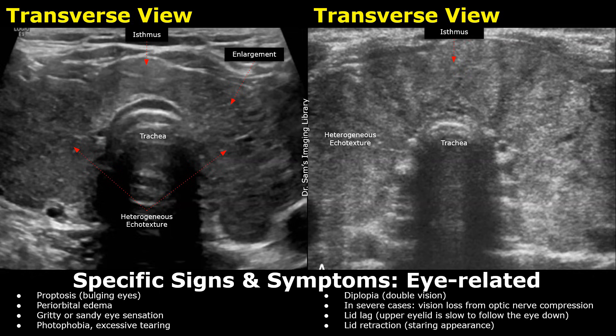Photophobia refers to abnormal sensitivity or intolerance to light. Diplopia refers to double vision. And in severe cases, blindness may occur due to optic nerve compression. Graves' disease can also cause eyelid problems.